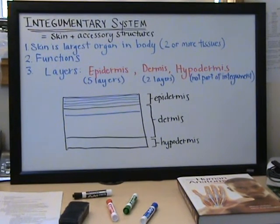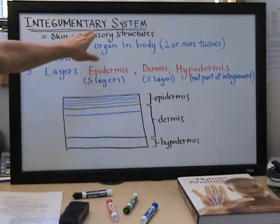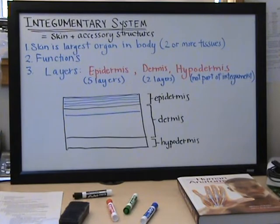Today we'll talk about the integumentary system. The integumentary system is made up of the skin plus accessory structures. Accessory structures are things like hair and nails, glands, all these things that are found within the skin.